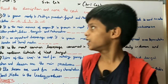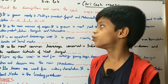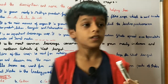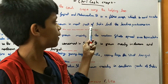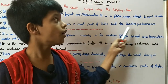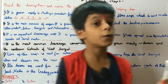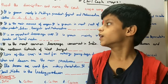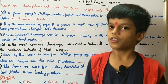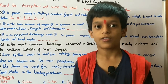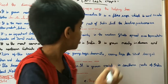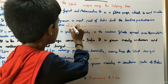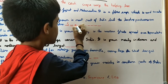Number 2: It is the main source of sugar. It is grown in most parts of India, but the leading producers are Uttar Pradesh, Bihar, Punjab and Maharashtra. So friends, the answer is sugarcane.